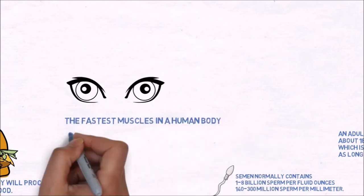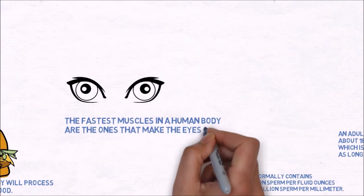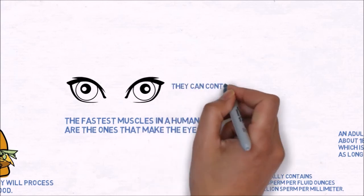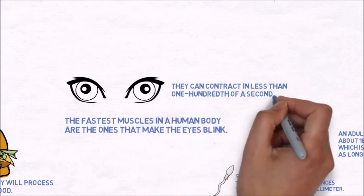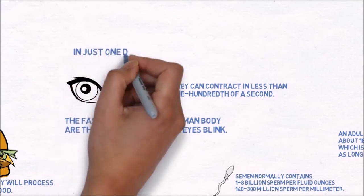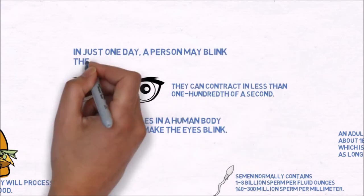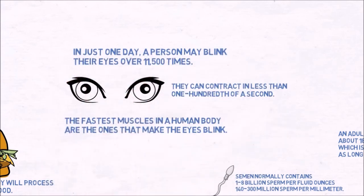The fastest muscles in a human body are the ones that make the eyes blink. They can contract in less than one hundredth of a second. In just one day, a person may blink their eyes over 11,500 times.